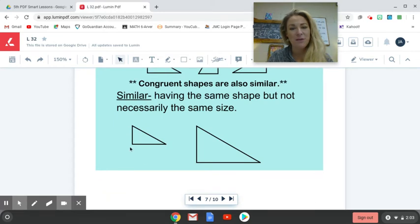So here's an example of two triangles that are similar. You can see that they're the exact same shape. We're talking about these two right triangles here, but just different sizes. One is smaller than the other, or one is larger than the other.